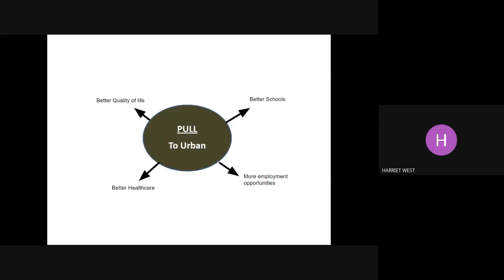Pull factors are the things that are pulling people towards the cities and urban areas: more employment opportunities, better schools, better healthcare, and better quality of life. With better quality of life, it's really important that we understand that this is relative to the people that move there. We might look at pictures of where they live in cities and think that can't be a better quality of life — but actually, from where they have come, where there's no employment, no food, no jobs, it is a better quality of life and there's a better future for them.